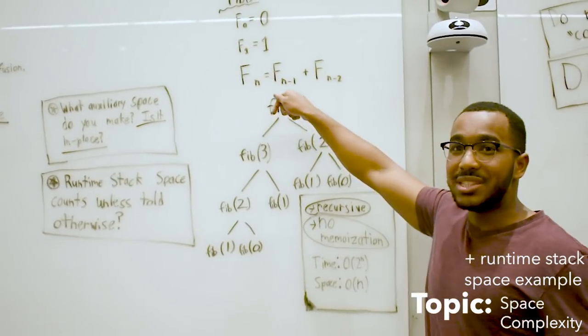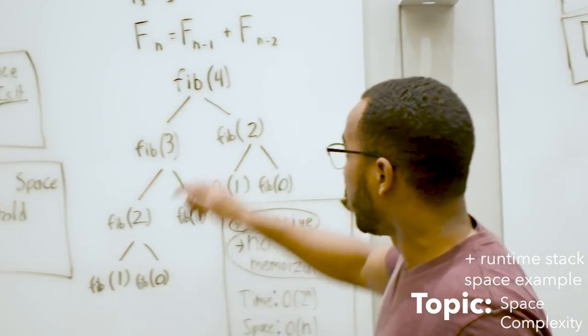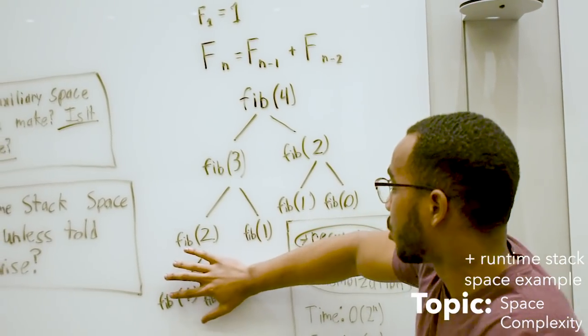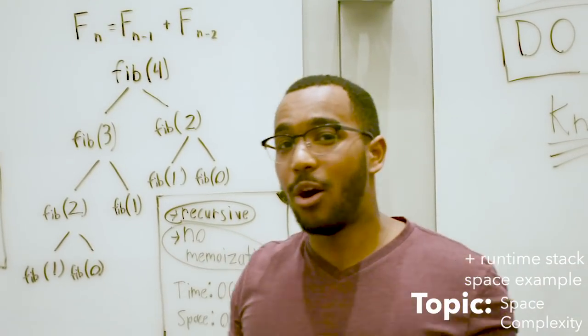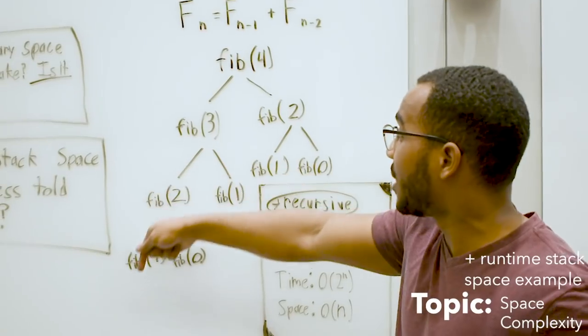What do we notice? How deep does the call stack go? This is sort of like backtracking. We'll go deep, and once we solve this problem, the call stack is going to remove these. At max, how many calls do we have on the stack? At max, we have four levels. We're going to have four levels on the stack.